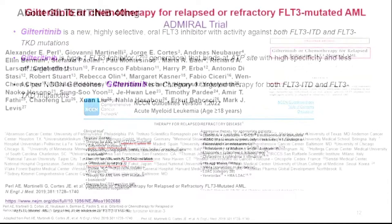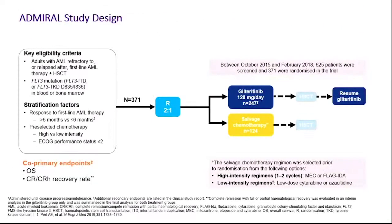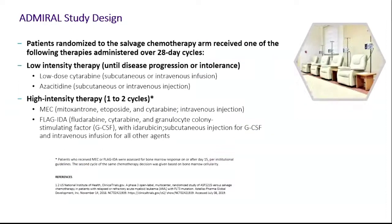This approval is based on the Admiral trial — a Phase 3 randomized trial comparing giltretinib to standard of care for relapsed refractory FLT3 ITD and TKD AML patients. Patients were randomized 2-to-1 to either giltretinib 120 mg daily until intolerance or progression, or salvage therapy — either 1-2 cycles of intensive chemotherapy or low-intensity chemotherapy until progression or intolerance. Both groups were allowed to proceed to stem cell transplant based on investigator choice, the giltretinib group was allowed to resume after transplant, and importantly there was no crossover offered.